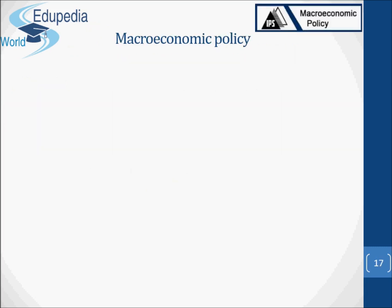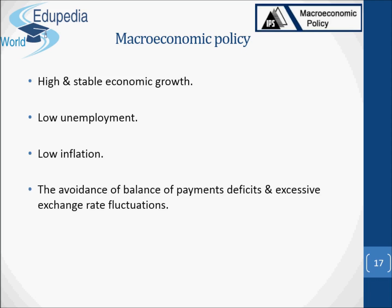Finally, let's talk about macroeconomic policy. From the four issues above, we can identify four macroeconomic policy objectives that governments typically pursue: high and stable economic growth, low unemployment, low inflation, and the avoidance of balance of payments deficits and excessive exchange rate fluctuations. Unfortunately, these policy objectives may conflict. For example, a policy designed to accelerate the rate of economic growth may result in a higher rate of inflation and a balance of payments deficit. Governments are thus often faced with awkward policy choices. Societies face trade-offs between economic objectives.